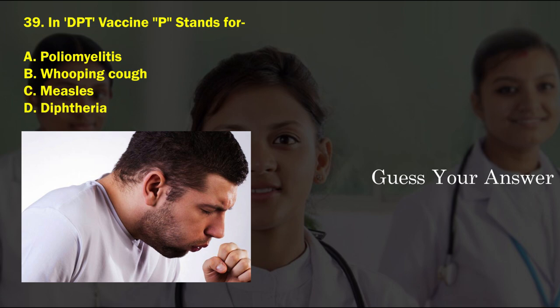In the DTP vaccine, P stands for — option A: poliomyelitis, option B: whooping cough, option C: measles, option D: diphtheria. The correct answer is option B, whooping cough.